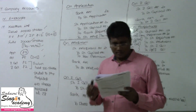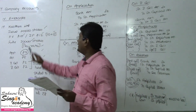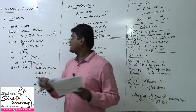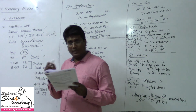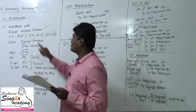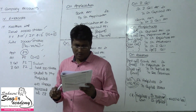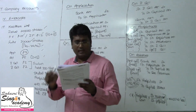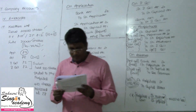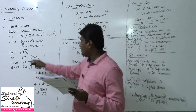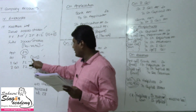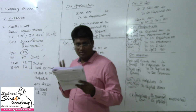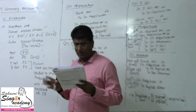Question 17: Kasturi Limited had allotted 20,000 shares at a face value of ₹10 each at a premium of ₹2, so the issue price is ₹12. These were issued to applicants of 30,000 shares. The amount payable was ₹1 on application, ₹5 on allotment including premium (that is ₹3 face value plus ₹2 premium), ₹2 on first call, and ₹2 on second or final call.